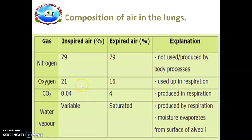Here you have inspired air, expired air, and explanation. This is the composition of air in the lungs. Nitrogen is 79 percent inspired and also 79 percent expired - it is not produced by body processes or not used. Oxygen is 21 percent inhaled and 16 percent exhaled, used up in respiration. Carbon dioxide is about 0.04 percent in inspiration and 4 percent in expiration.